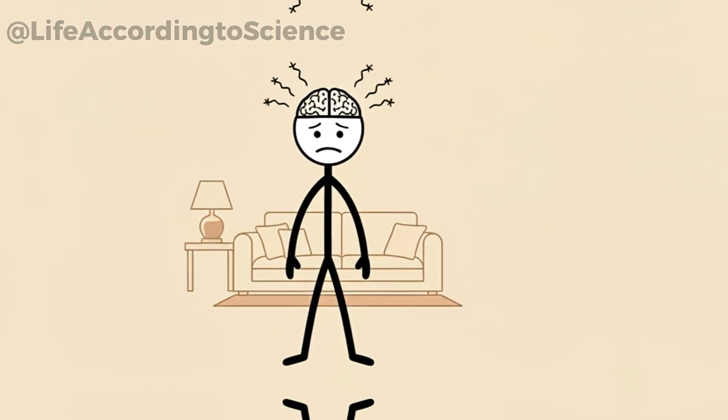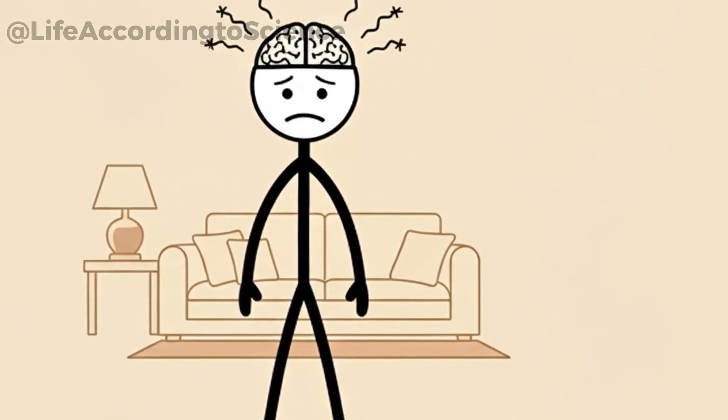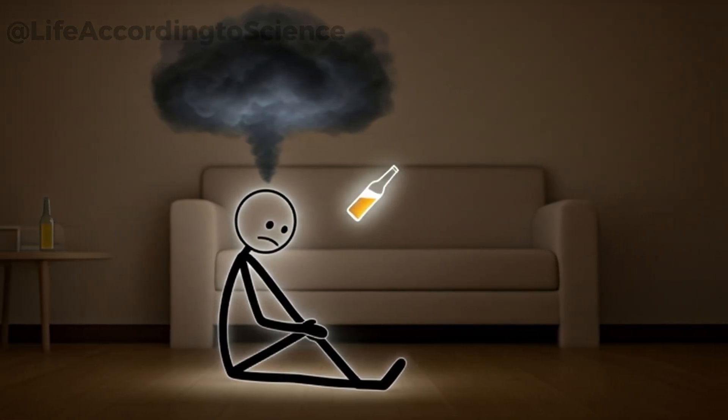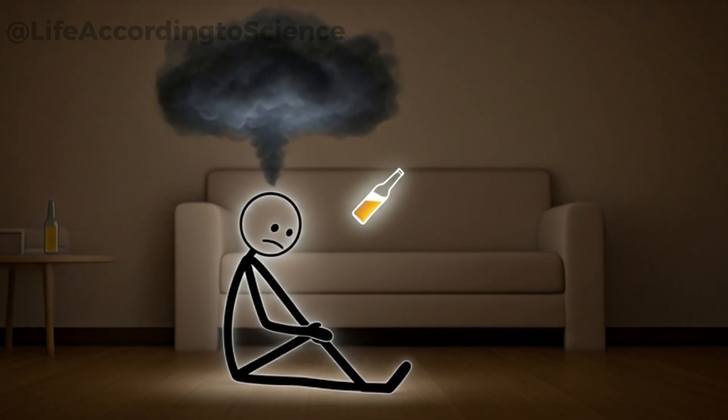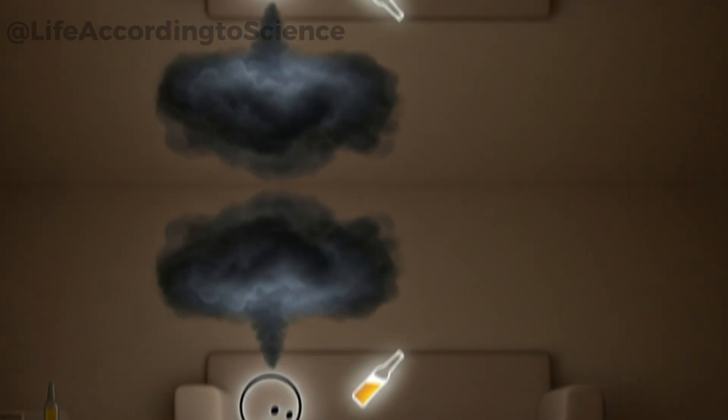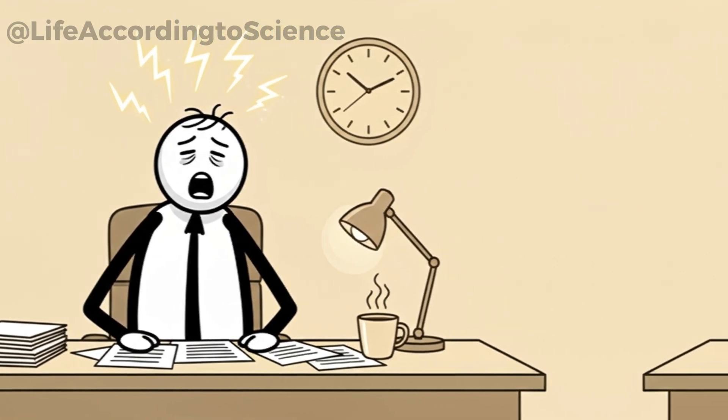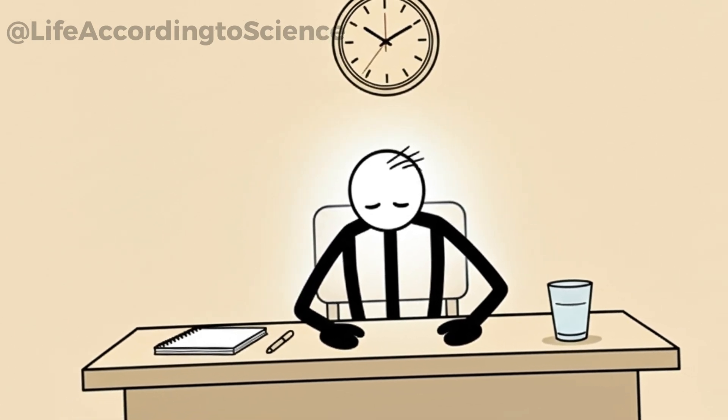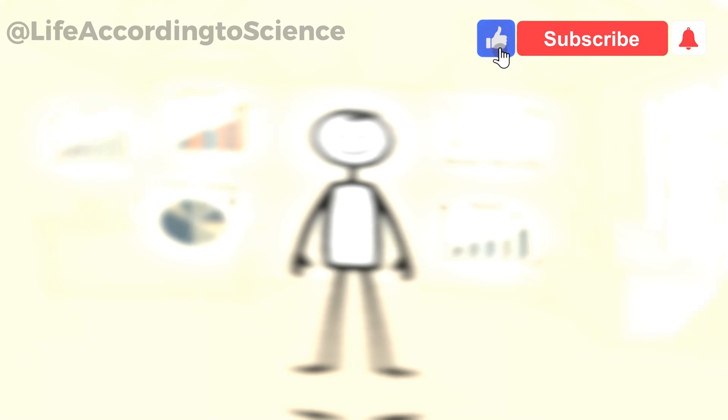Mood also takes a hit. Daily alcohol use interferes with serotonin balance, the happiness chemical. This contributes to mood swings and, in some cases, mild depression. People often drink to feel better, but the habit quietly fuels the very stress and sadness they hope to escape. Energy levels plummet as well. With disrupted sleep, poor nutrient absorption, and hormonal imbalances, you start to feel drained more often. That afternoon slump becomes your new normal.